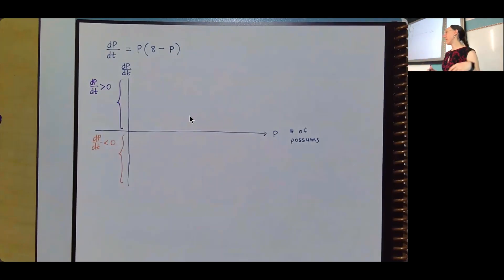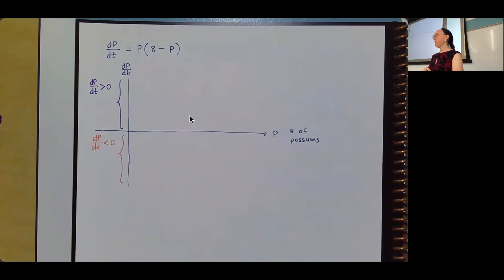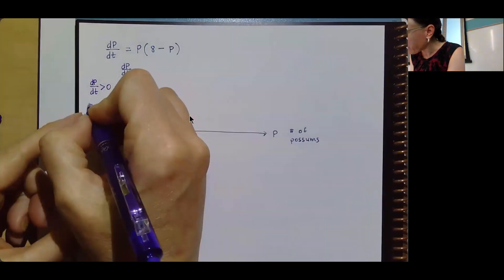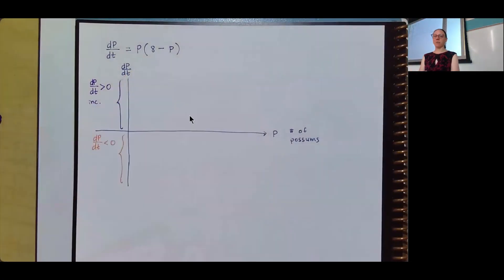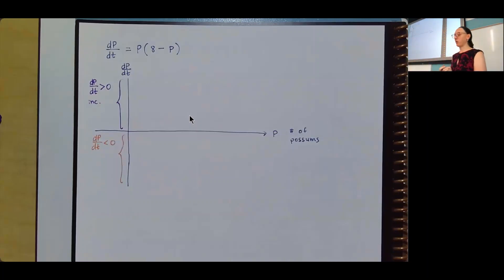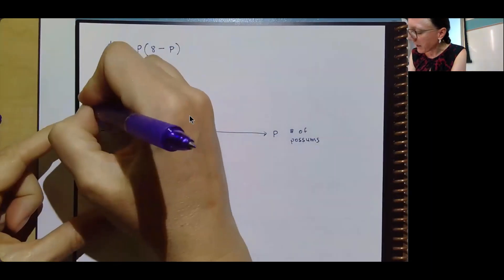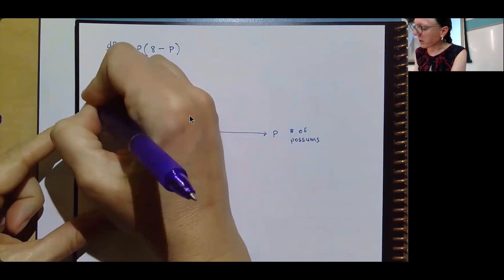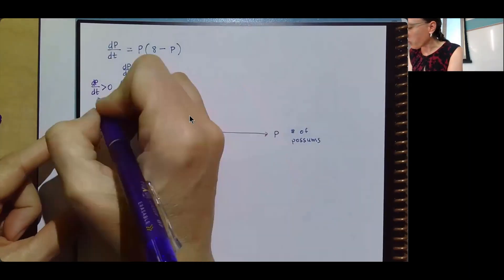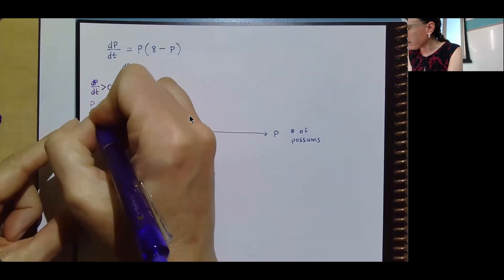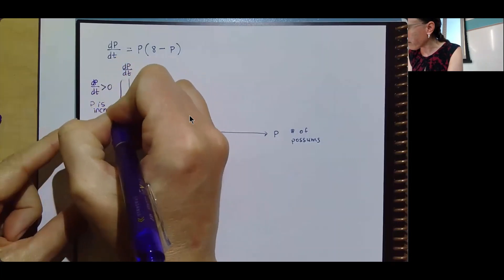Think back to 17a for a second: if my derivative is positive, what are some things I know? It's increasing. So if dp/dt is positive, that means p is increasing. I want to be a bit more specific here — it's not just that something is increasing, it's specifically that p, the population, is increasing.